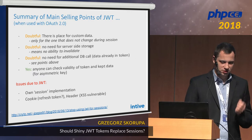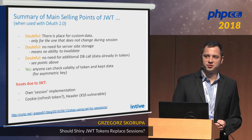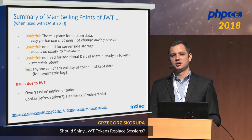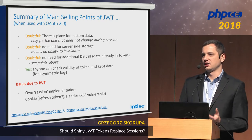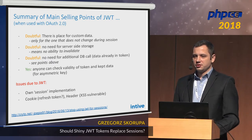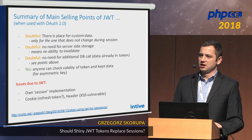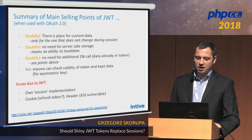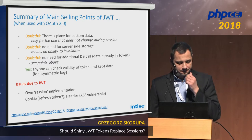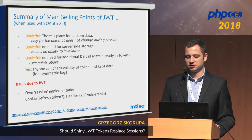Going back to that average 'JWT tokens are awesome' page — I'm not saying they're not, but some of their points are at least doubtful. There is a place for custom data, yes, as long as you as a server can easily issue new tokens on the fly — if it's a separate OAuth authority, you cannot. You don't need to store it server-side, yes, if you're happy with being unable to invalidate it and having to wait for it to expire. And no need for additional DB calls — see the points above. Also, if you choose this solution, you have to implement at least part of your session logic on your own.